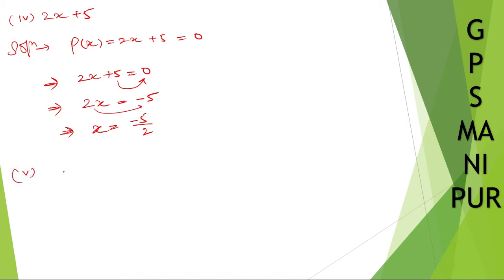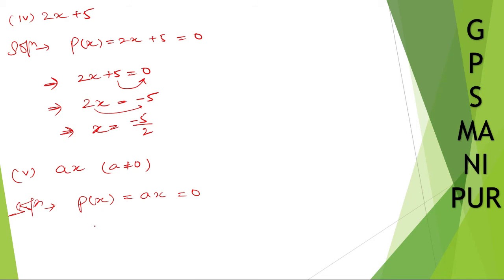Roman number five: p(x) = ax, where a ≠ 0. Setting p(x) = 0, we get ax = 0, so x = 0/a. Since we're dividing zero by a non-zero number, x = 0.